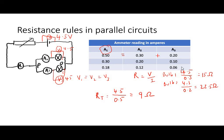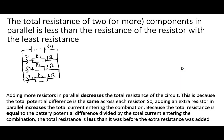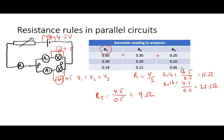The key thing is that the total resistance through a parallel circuit is smaller than the lowest resistance of any of the individual resistors. So the key rule to write down: the total resistance of two or more components in parallel is less than the resistance of the resistor with the least resistance. The total resistance is less than the resistance of the resistor with the least resistance.